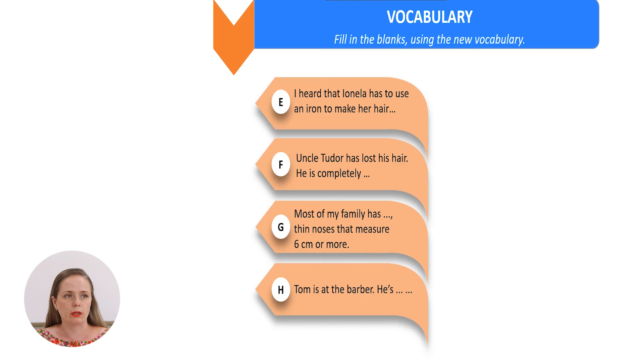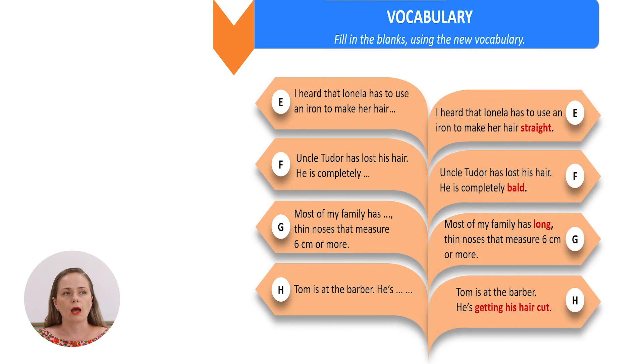The answers should be like this. I heard that Ionella has to use an iron to make her hair straight. Uncle Tudor has lost his hair. He is completely bald. Most of my family has long thin noses that measure six centimeters or more. Tom is at the barber. He is getting his hair cut. Very good.